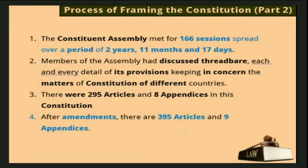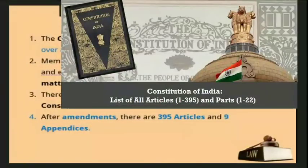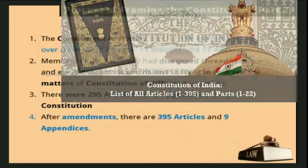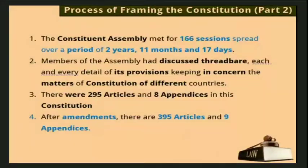Currently, there are 395 articles and 9 appendices — meaning about 100 articles were added over approximately 70–73 years. We can say the Constitution underwent fundamental changes; many amendments were brought in over time.